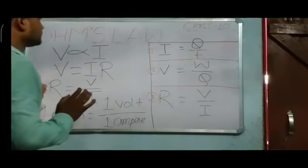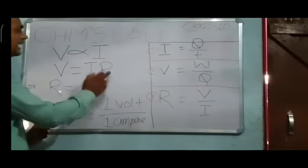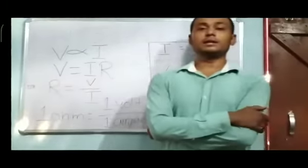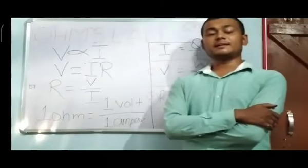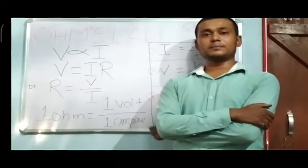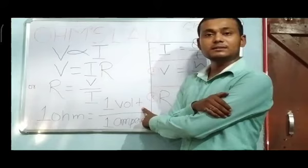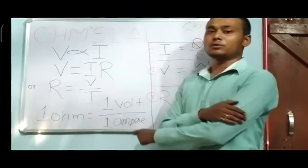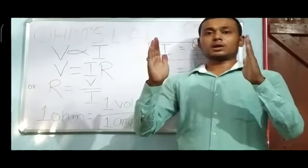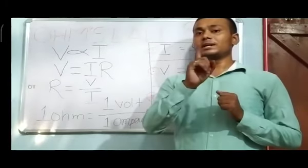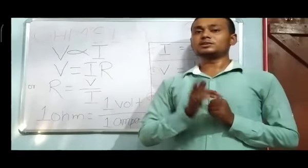Ohm's Law states V is directly proportional to I, giving us V equals IR. From this, the formula for resistance is R equals V upon I. When we say there is one Ohm of resistance in a current-carrying circuit, it means one volt of potential difference drives current from the positive to negative terminal.